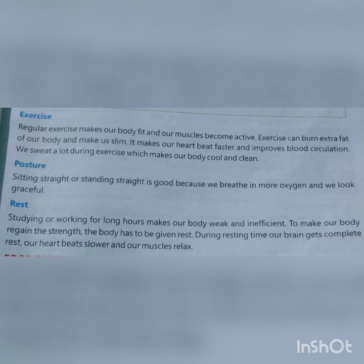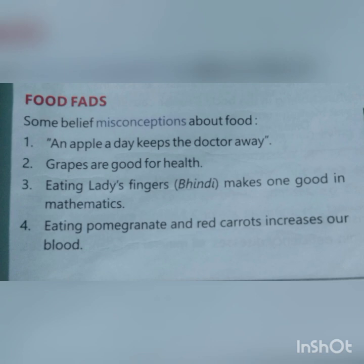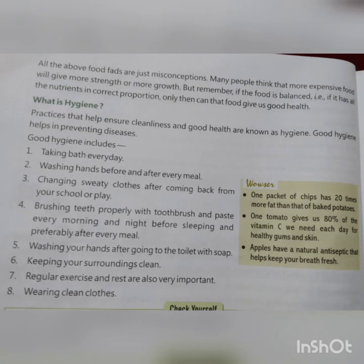Rest करते समय हमारा brain पूरी तरह rest में होता है, heartbeats slow हो जाती हैं और muscles पूरी तरह relax होती हैं। Food facts — कुछ food के बारे में गलत फर्जी धारणाएं भी फैली हुई हैं, जैसे: an apple a day keeps the doctor away; grapes are good for health; eating lady's fingers makes one good in mathematics; eating pomegranate and red carrots increase our blood। ये सभी misconceptions हैं। हमें food हमेशा balanced proportion में खाना चाहिए।